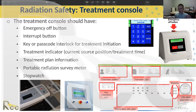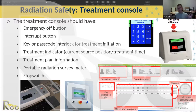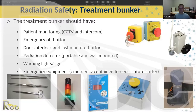If we had a radiation emergency where the source didn't retract into the safe, the person at risk is primarily the patient. The physician and physicist are most likely getting a very minimal dose. For the physician, if they do get dose, it's going to be the hands — which are considered more radioresistant in terms of cancer induction than other parts of the body.